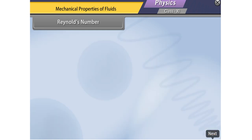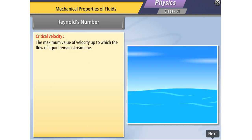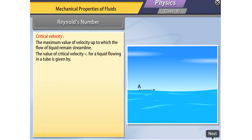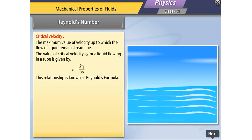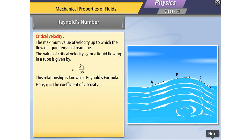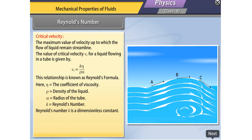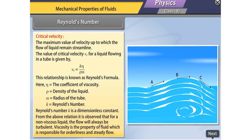Reynolds number: Critical velocity is the maximum value of velocity up to which the flow of liquid remains streamlined. The critical velocity vc for a liquid flowing in a tube is given by vc = kη/(ρα), known as Reynolds' formula, where η is the coefficient of viscosity, ρ is the density of the liquid, α is the radius of the tube, and k is the Reynolds number — a dimensionless constant. It is observed that for a non-viscous liquid, the flow will always be turbulent. Viscosity is the property responsible for orderliness and steady flow.